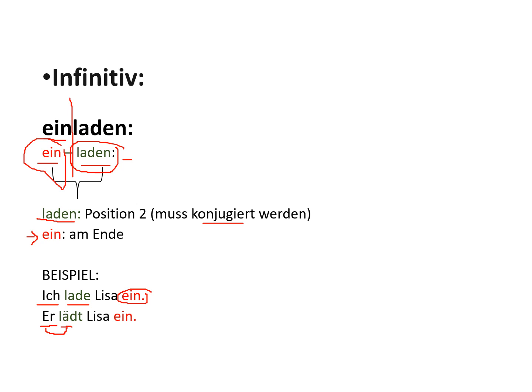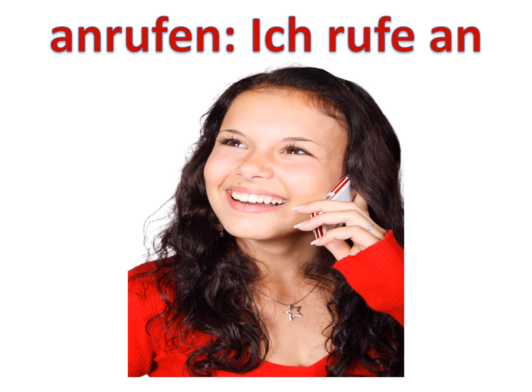I do have more examples later in the video, so stay with me till the end and I hope you will understand it a little better. Another example is 'anrufen.' Anrufen means 'to call' and here the prefix is 'an.' So you divide the verb right after 'an,' which leaves you with 'an' and 'rufen.'